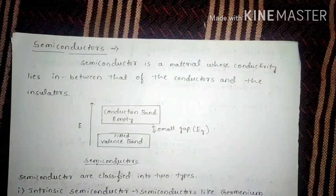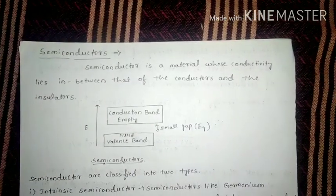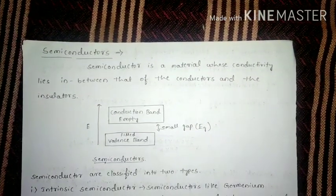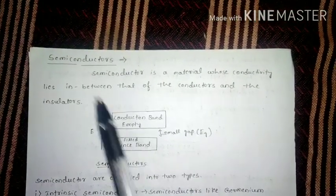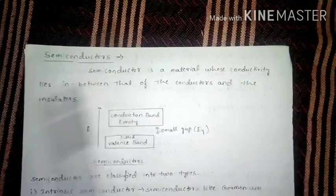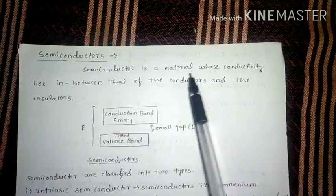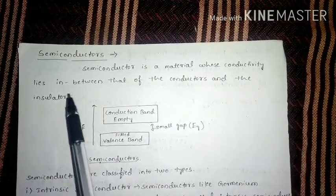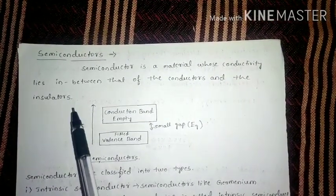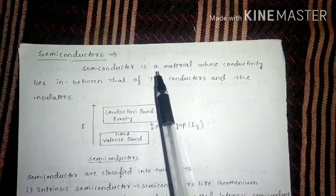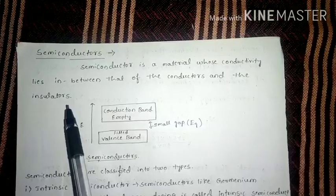Hello dear students, today we will start the next part in Module 5O, Material Science, that is semiconductors. A semiconductor is a material whose conductivity lies in between that of a conductor and an insulator. These are a special type of material whose conductivity always lies in between the conductor and an insulator.